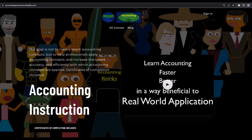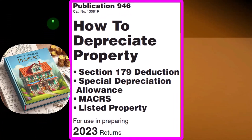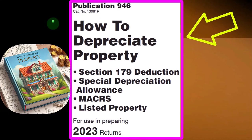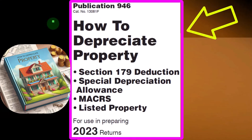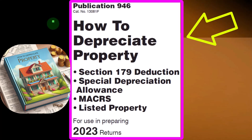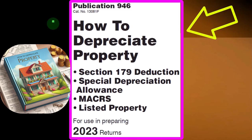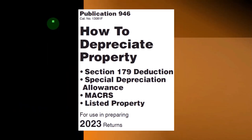If you would like a commercial-free experience, consider subscribing at accountinginstruction.com or accountinginstruction.thinkific.com. Most of this information can be found in IRS Publication 946, 'How to Depreciate Property' — covering the Section 179 deduction, special depreciation allowance, MACRS, listed property, and more — for tax year 2023, available at irs.gov.